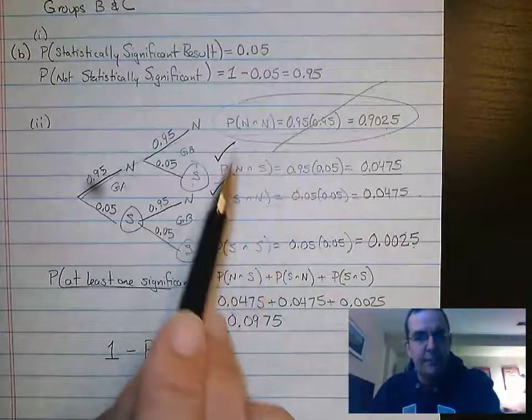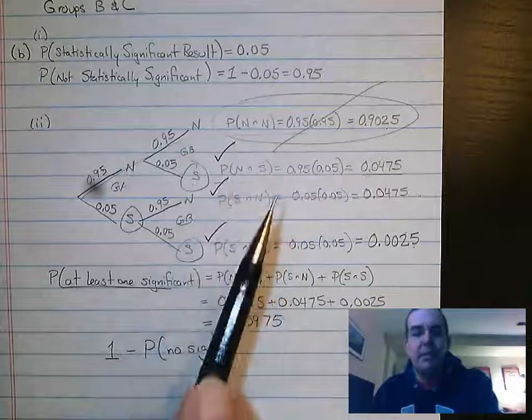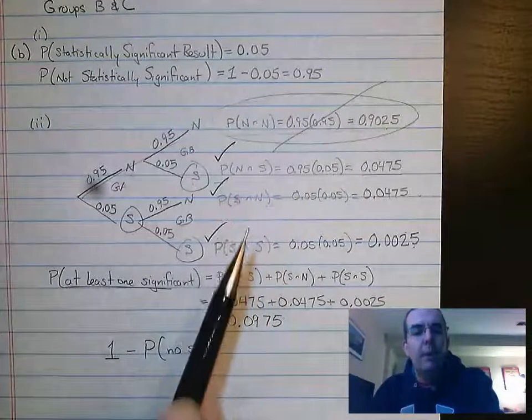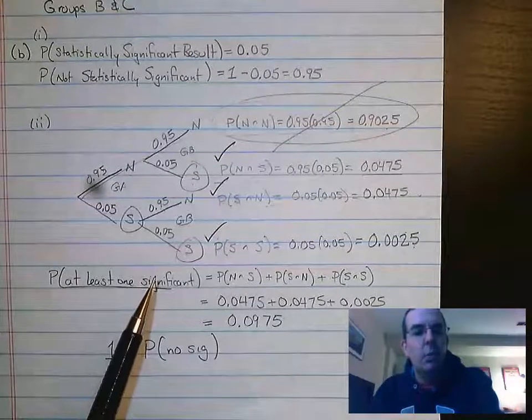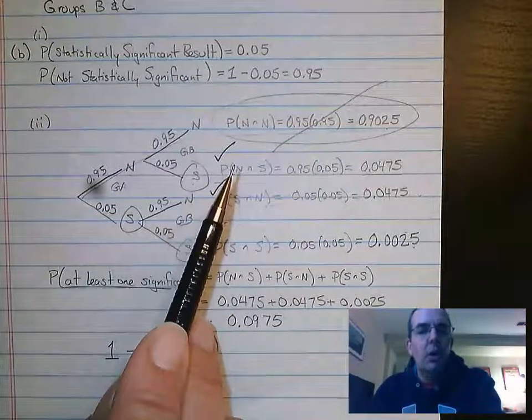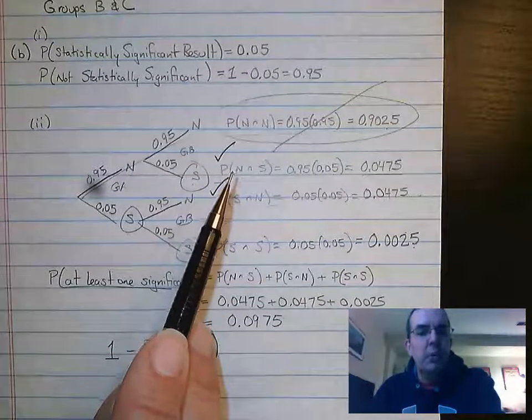What is the probability of at least one significant test? So in other words, what it's asking for, this branch right here, the second one,